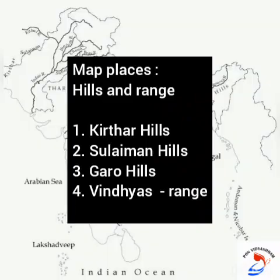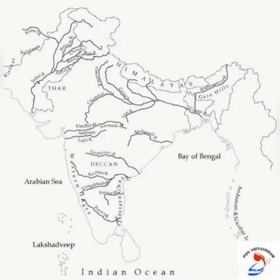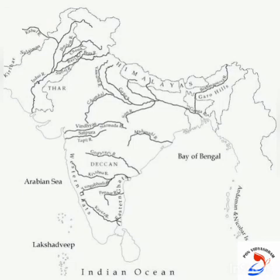First we will mark the hills and ranges. Kirtar hill — can you find Kirtar hill in the northwest? This is Kirtar hill; now write this on your map. Above Kirtar hill, the Sulaiman hill is present. Mark Sulaiman hill there.